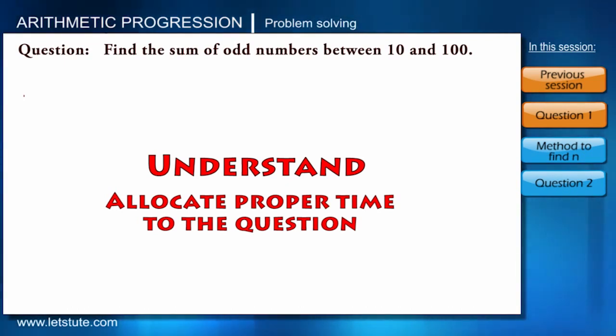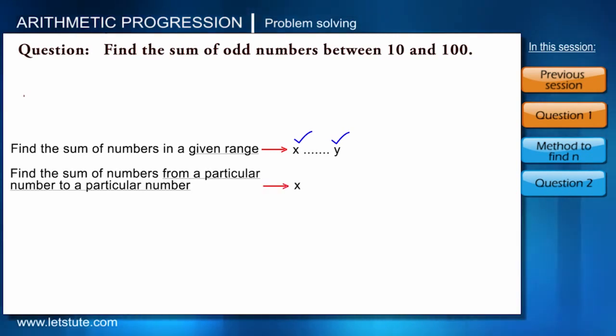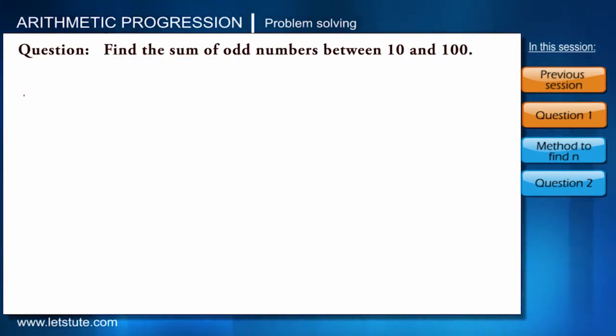Don't be in the rush to solve it without getting the question. When question says find the sum of numbers in the given range, then we need to include the lower limit and the upper limit. But if it says find the sum of numbers in between a particular range, then we will have to exclude upper limit and the lower limit. Like if the very same question was asking to find sum of even numbers, we wouldn't have considered 10 and 100.